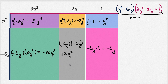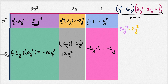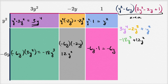So if we want the area of this entire rectangle, we can just add up the areas of the smaller ones. It's going to be 3y to the fourth, plus negative 2y to the third power, plus y squared, minus 18y to the third power, plus 12y squared, and then minus 6y.